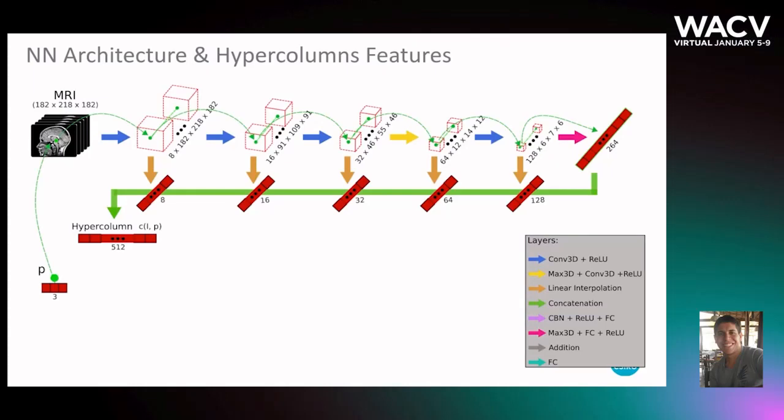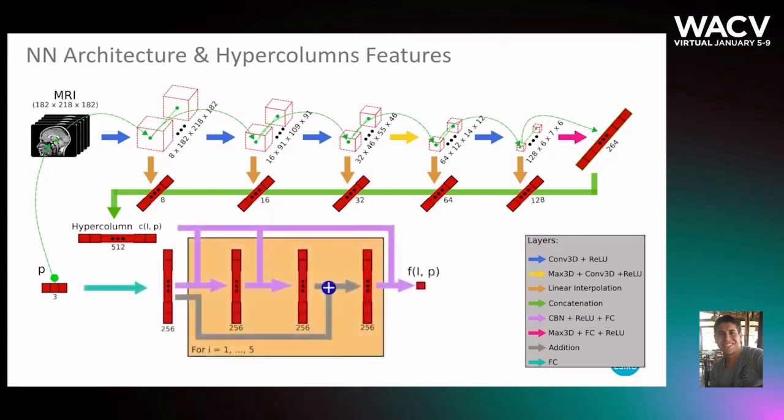Finally, this vector is named hypercolumn, and the point coordinates are passed to a decoder which outputs the implicit surface representation for this point according to the input image.